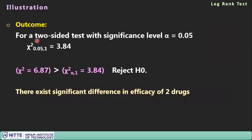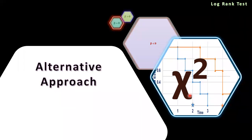Outcome: For a two-sided test at α = 0.05, the critical value is χ²(1) = 3.84. Since the calculated value 6.87 > 3.84, we reject H₀. Conclusion: there exists a statistically significant difference between the two survival curves — for example, a significant difference in efficacy between two drugs.